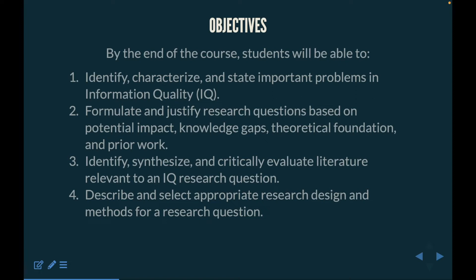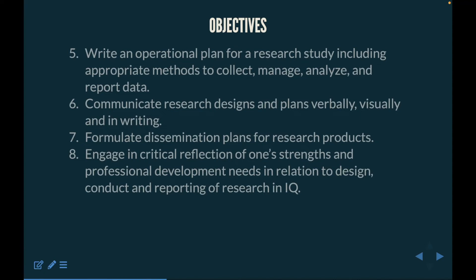You'll be able to critically evaluate literature relevant to information quality research questions, and describe and select appropriate research design and methods. You're also going to be able to write an operational plan for research studies, including appropriate methods to collect, manage, analyze, and report your data — communicating research designs and plans verbally, visually, and in writing. We'll also formulate dissemination plans and engage in critical reflection of our own strengths and professional development needed in the design, conduct, and reporting of research in information quality.